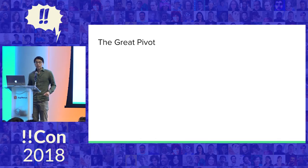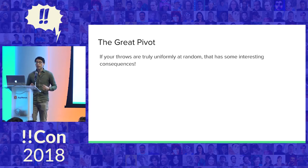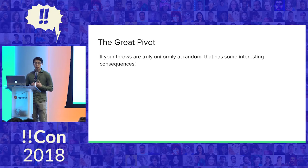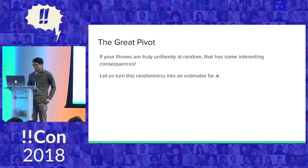So I'm not going to be a dart champion, I won't be on ESPN, but we can pivot. There's this really interesting thing that happens: if I truly have the ability to throw uniformly at random at this dartboard, there are some really interesting consequences that arise. One of which is I can use this randomness to estimate pi. You might ask why would I ever want to do that? I don't really have a good answer, but this is BangBangCon, so we're going to go forward with this.